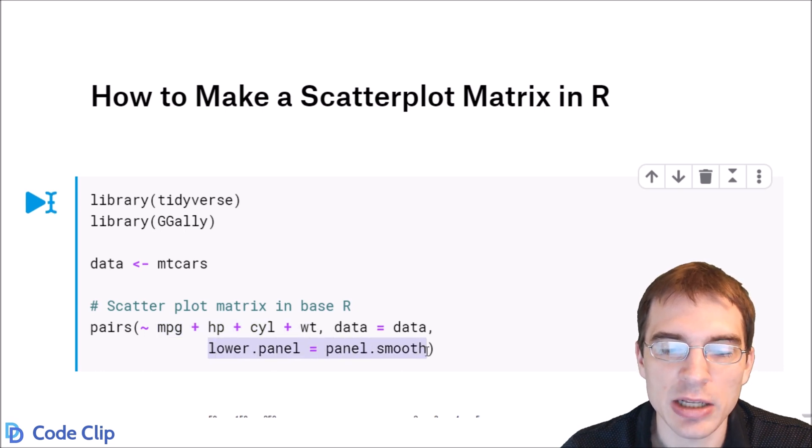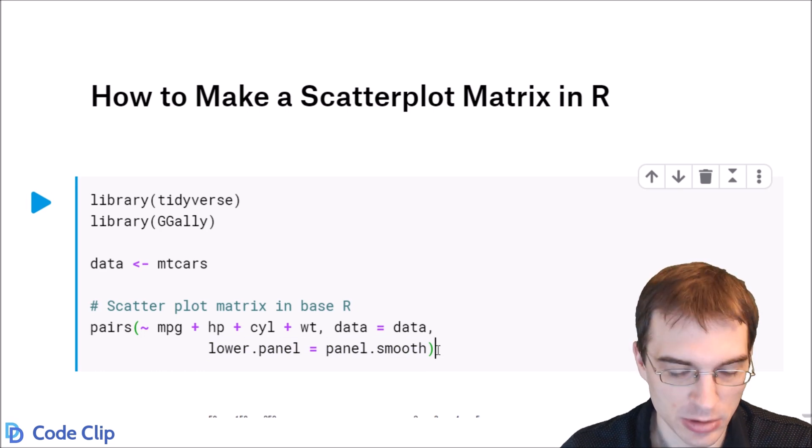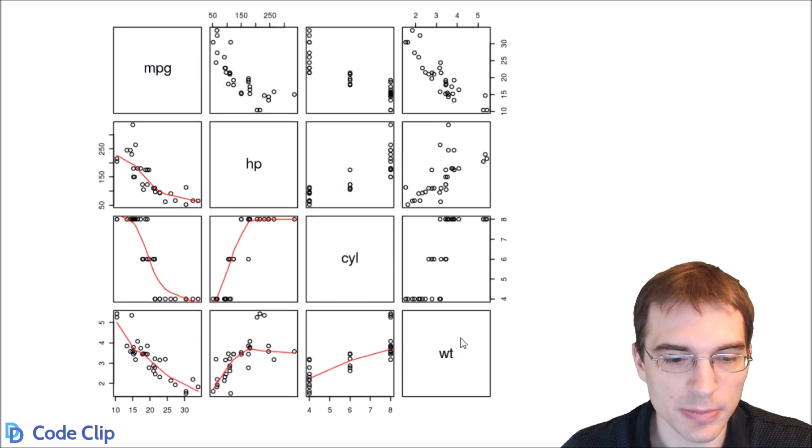This extra argument here is just adding a smoother line to the plot, so there'll be a little line showing a general trend. So we'll run this and see the result here. The scatterplot matrix is essentially just showing pairwise scatterplots of all the different variables you pass in.